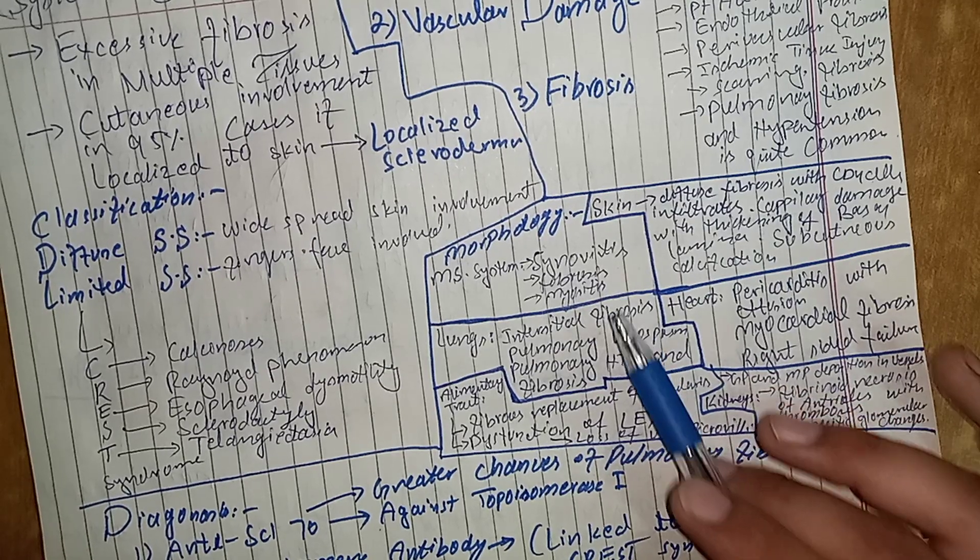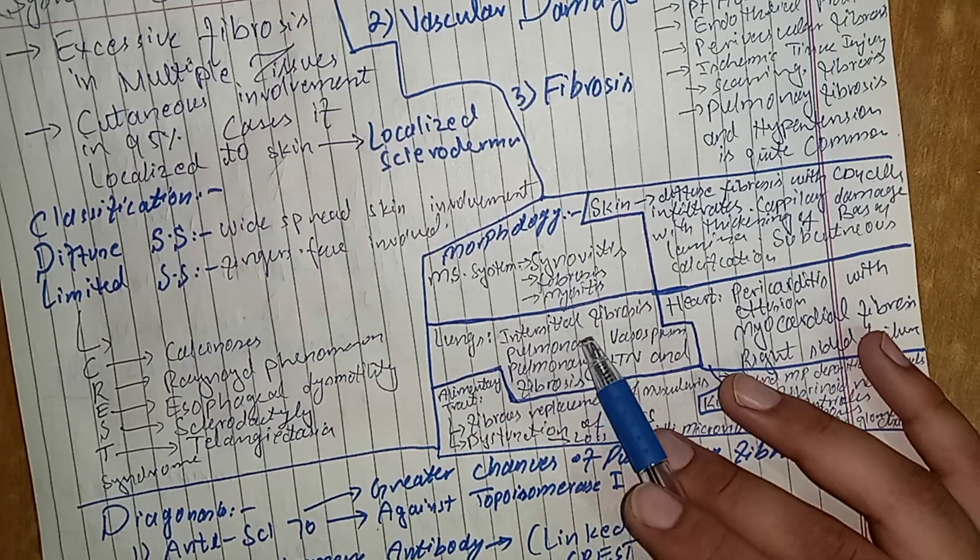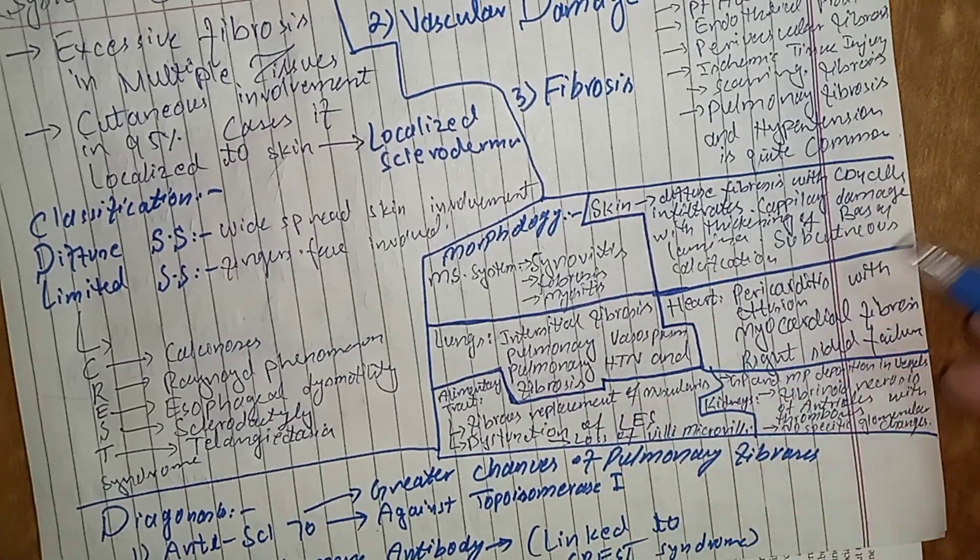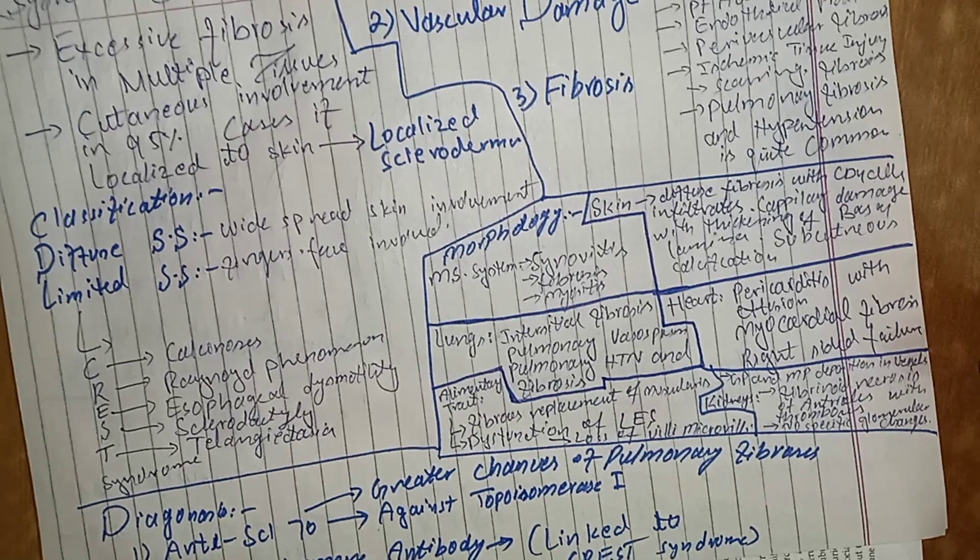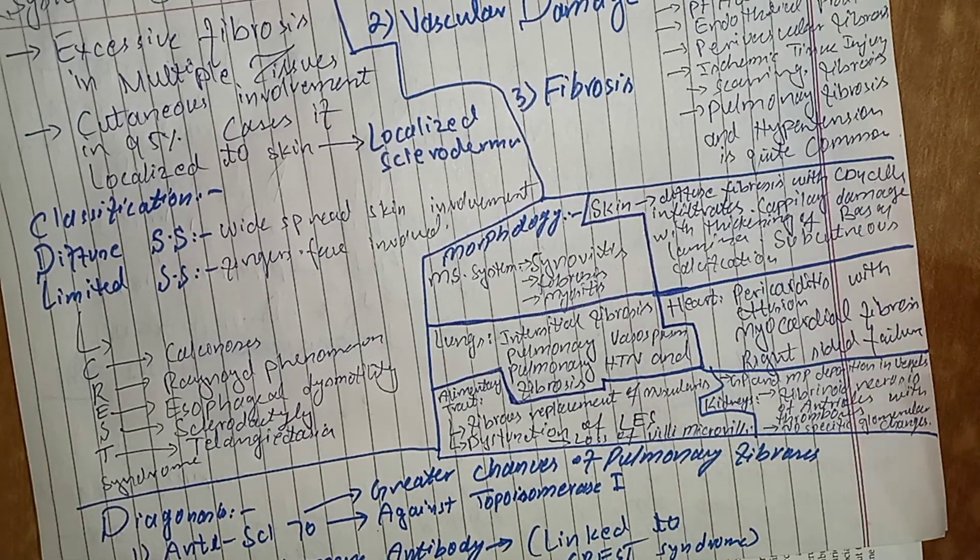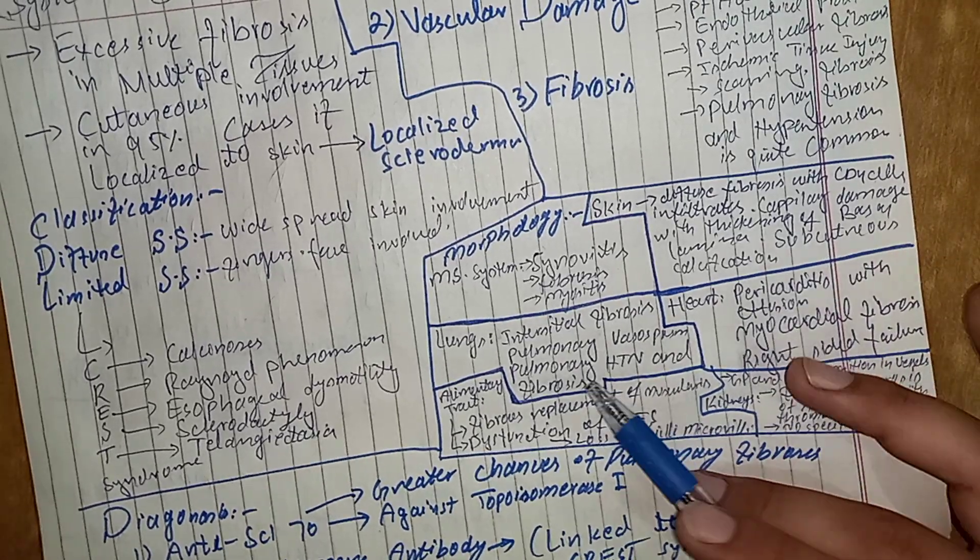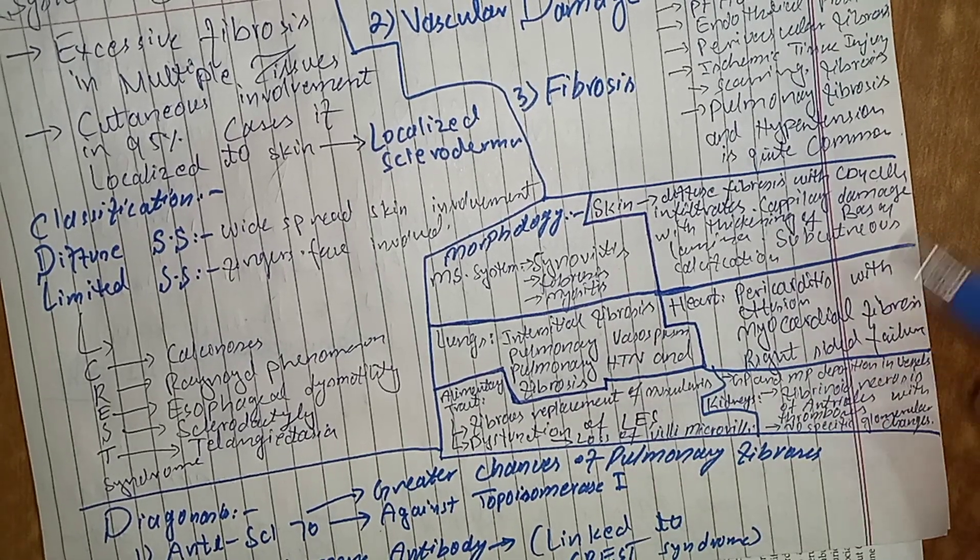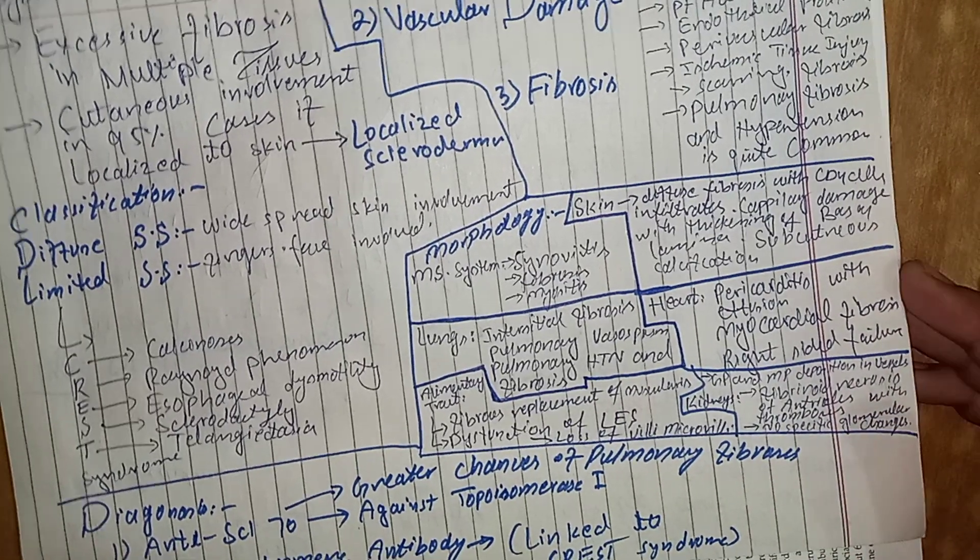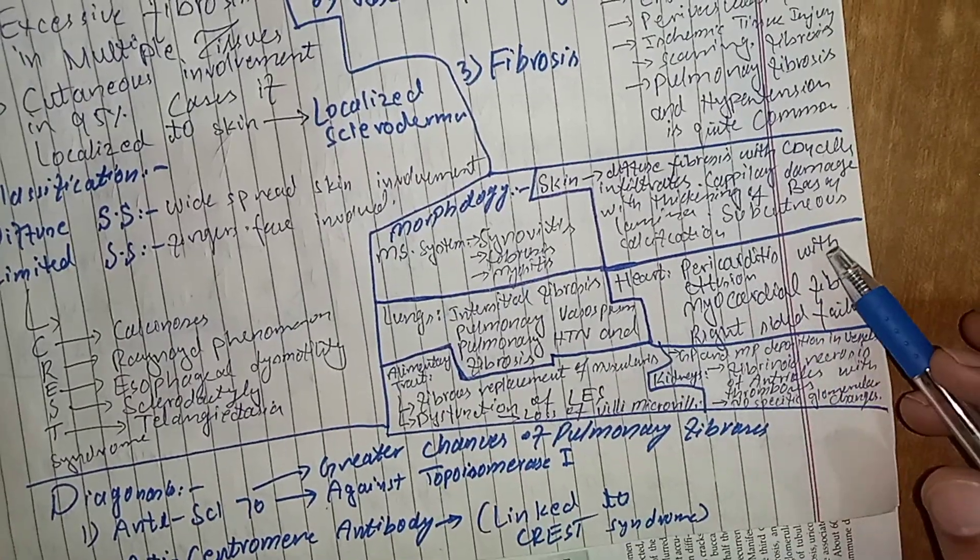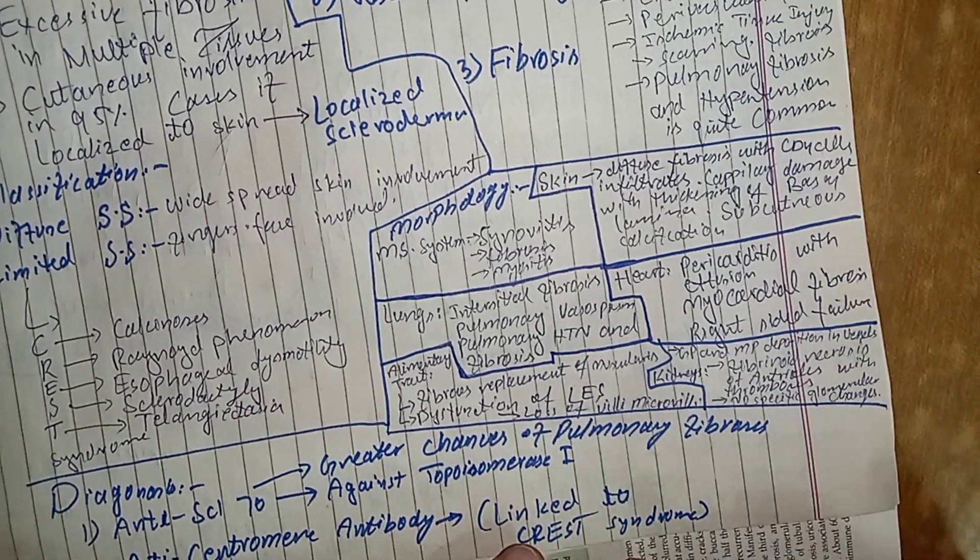There can be fibrosis and there can be myositis and inflammation of the muscle cells. And there is also involvement of the lungs. There can be interstitial fibrosis of the lung tissue with the infiltration of the inflammatory cells. And this interstitial fibrosis can also lead to the pulmonary vasospasm and the pulmonary vasospasm can promote pulmonary hypertension which can lead to the heart attack or you can say right-sided heart failure. And in heart, collagen deposition can cause pericarditis with effusion, there can be myocardial fibrosis and there can be right-sided failure due to lung involvement.